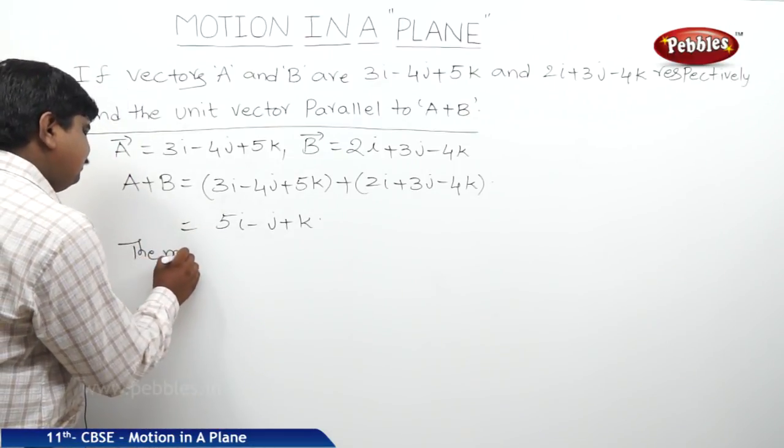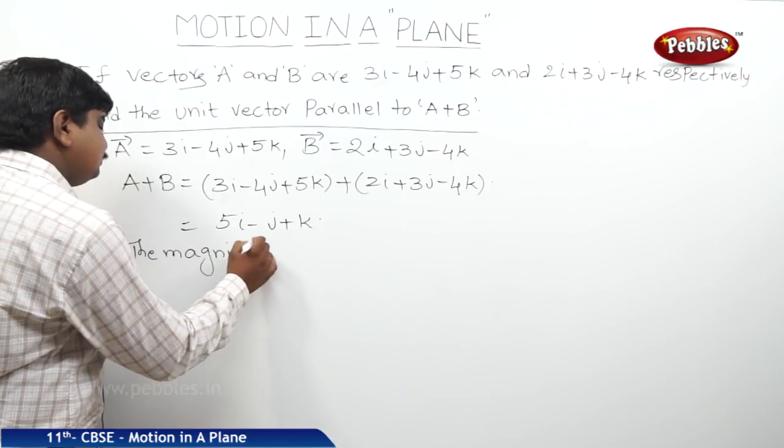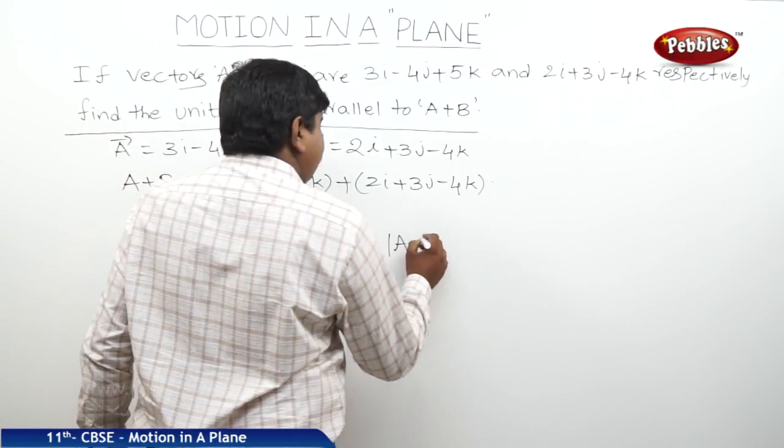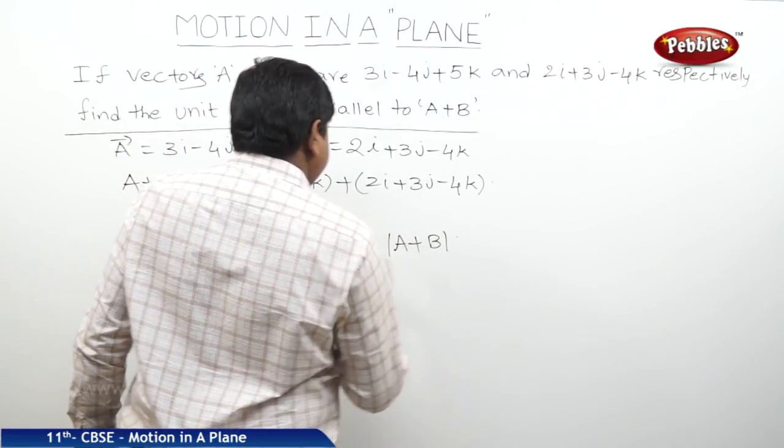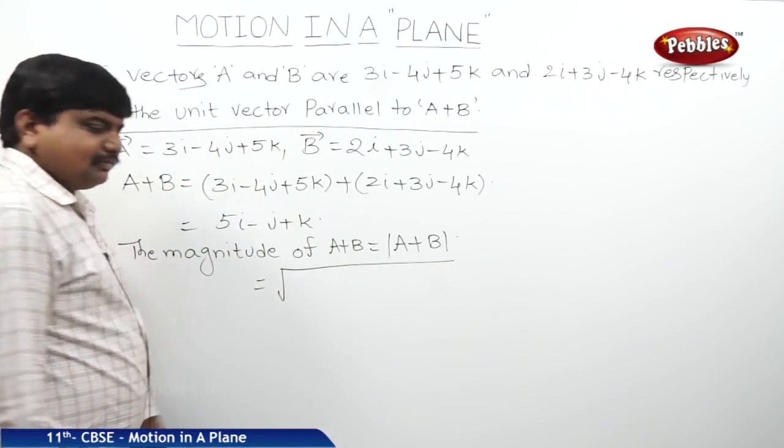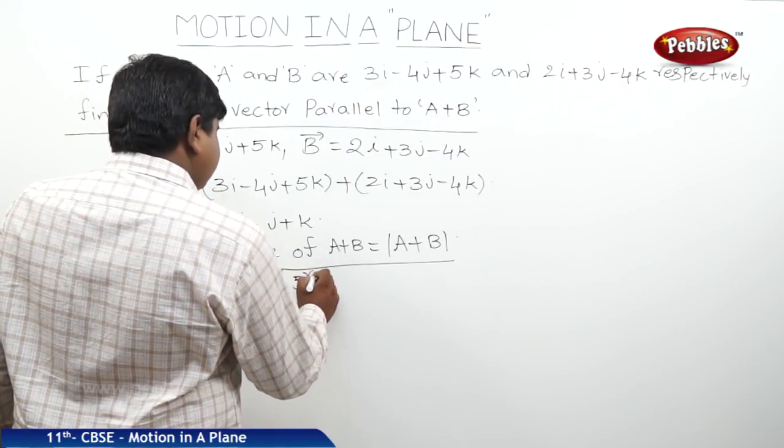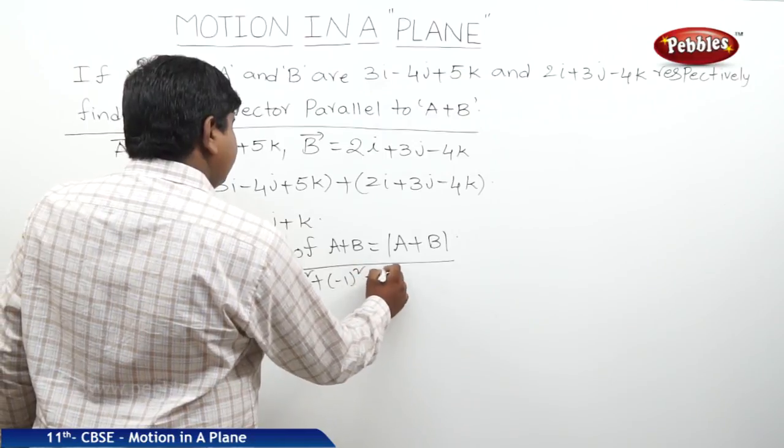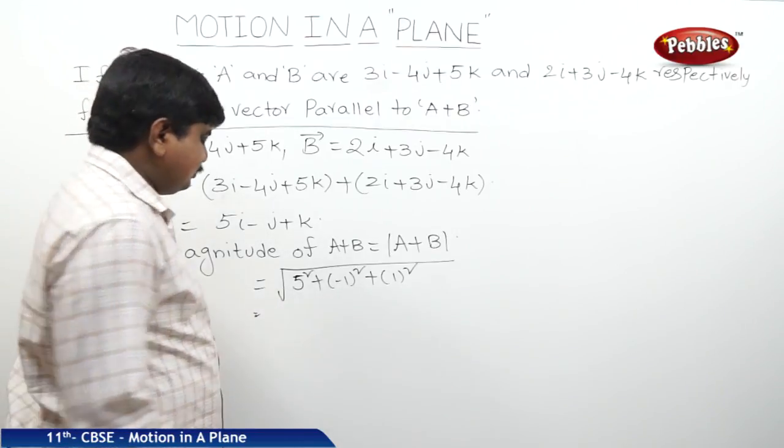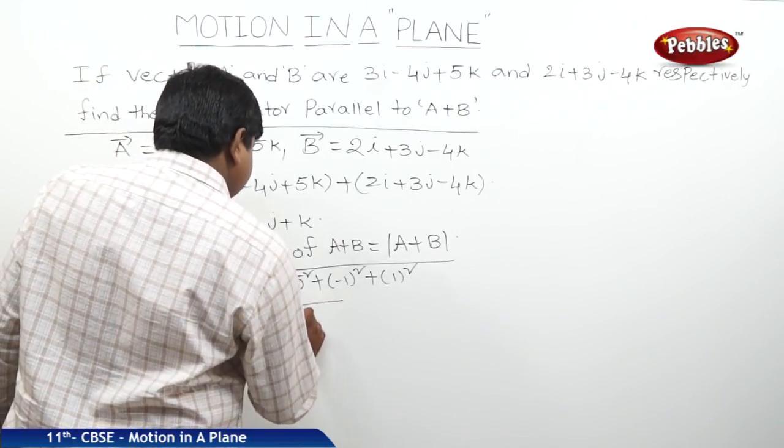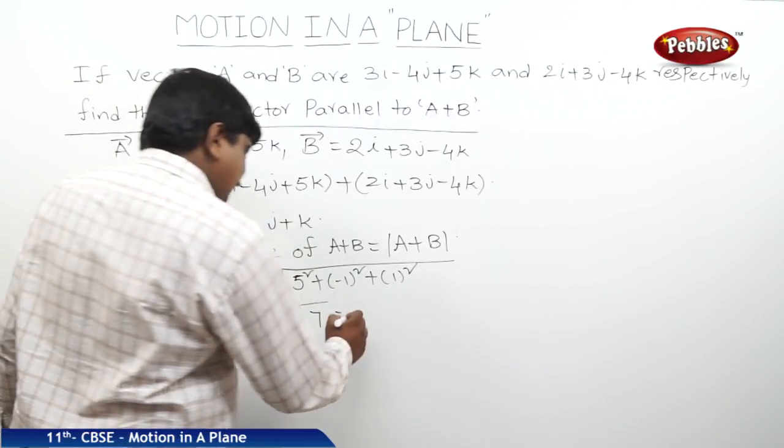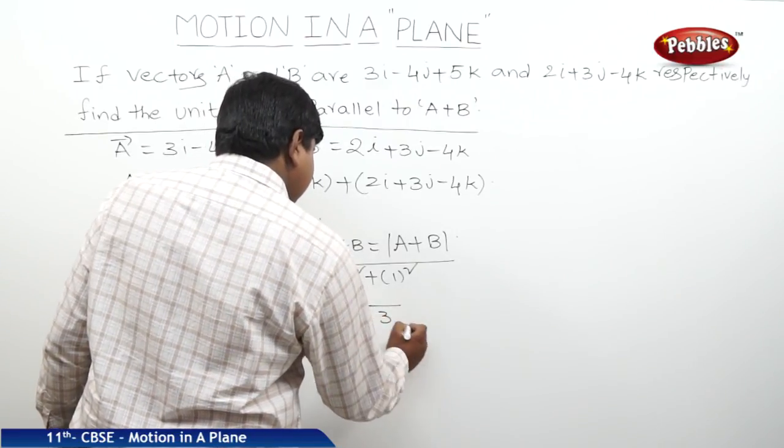The magnitude of a plus b is equal to mod of a plus b is equal to square root of x square plus y square plus z square. Therefore, 5 square plus minus 1 square plus 1 square, 5 square is 25, 25 plus 1, 26 plus 1, 27. It is square root of 27. In other words, we can write 3 root 3 units.